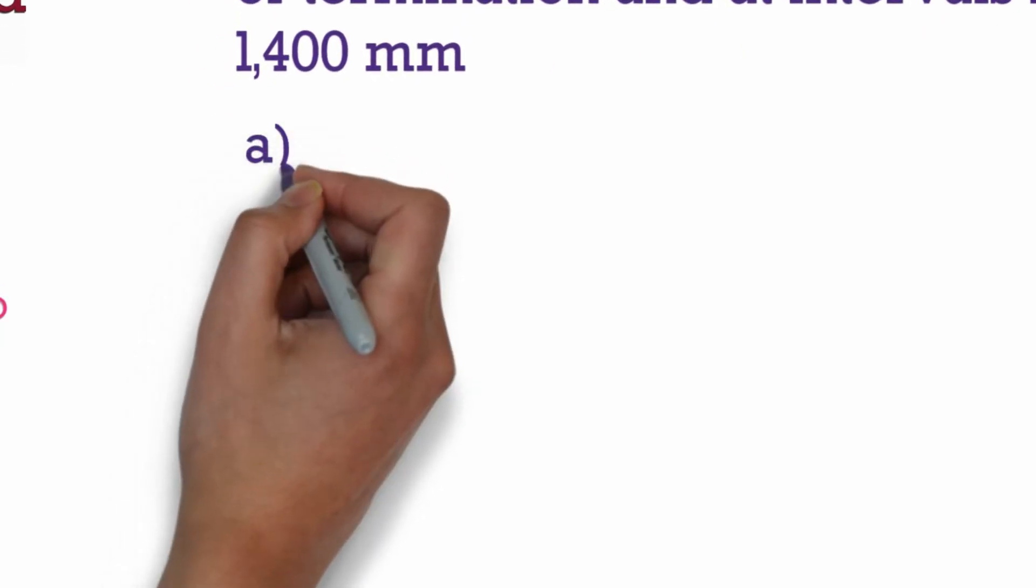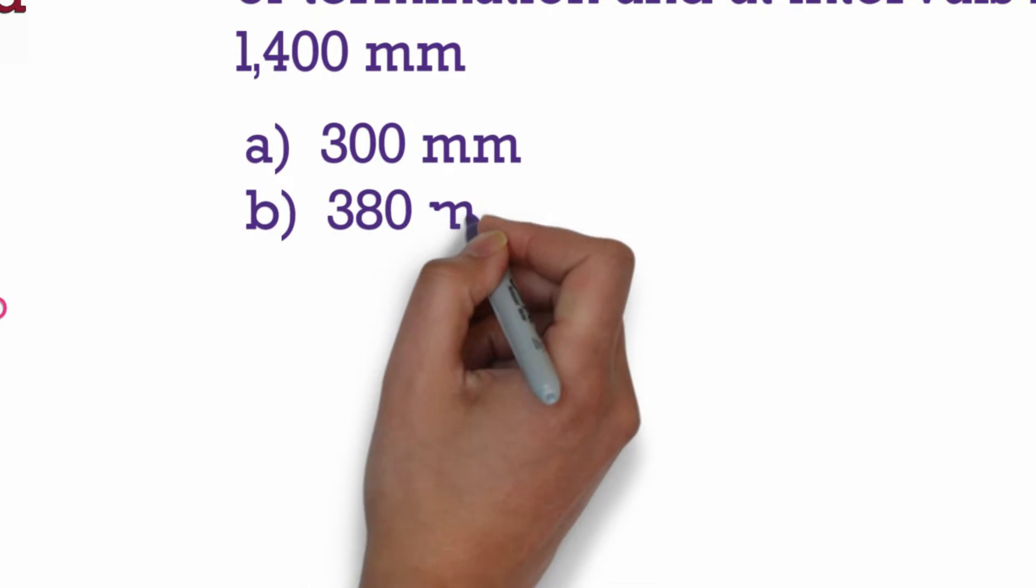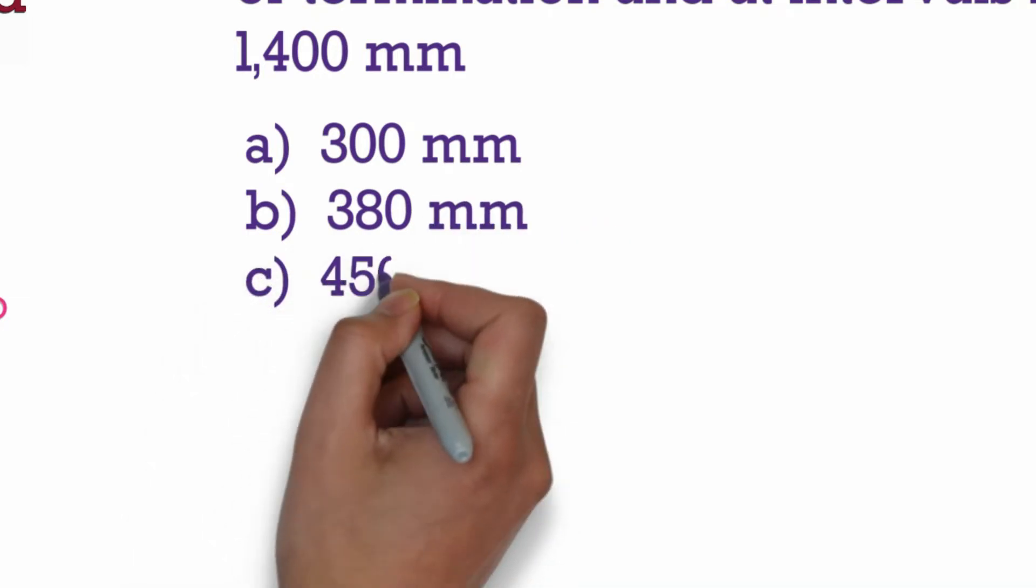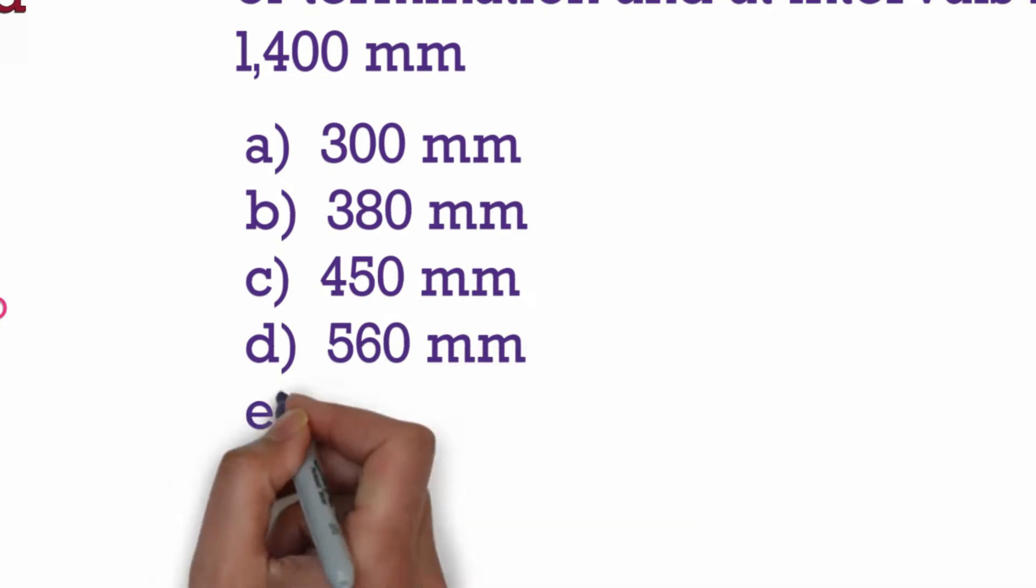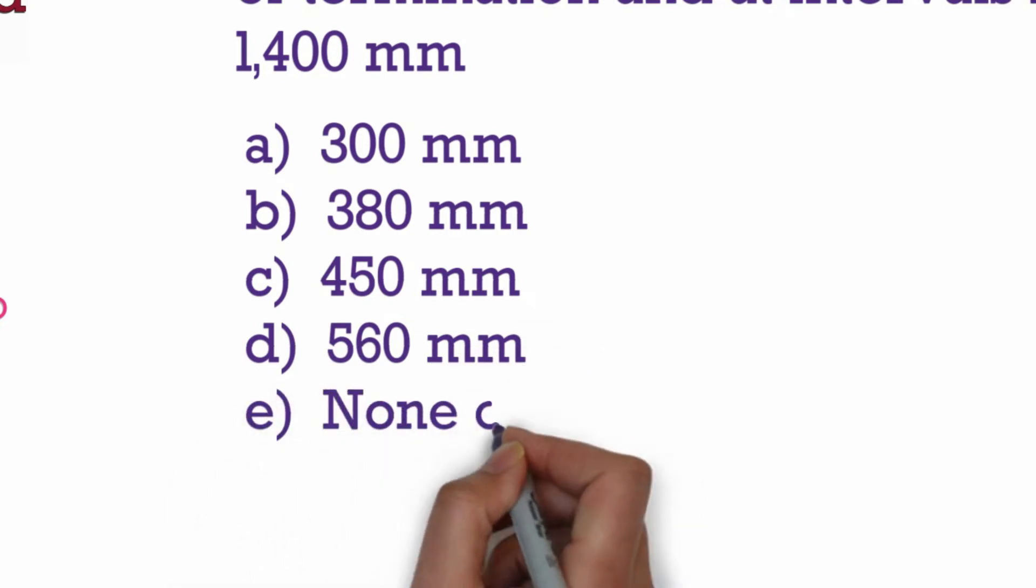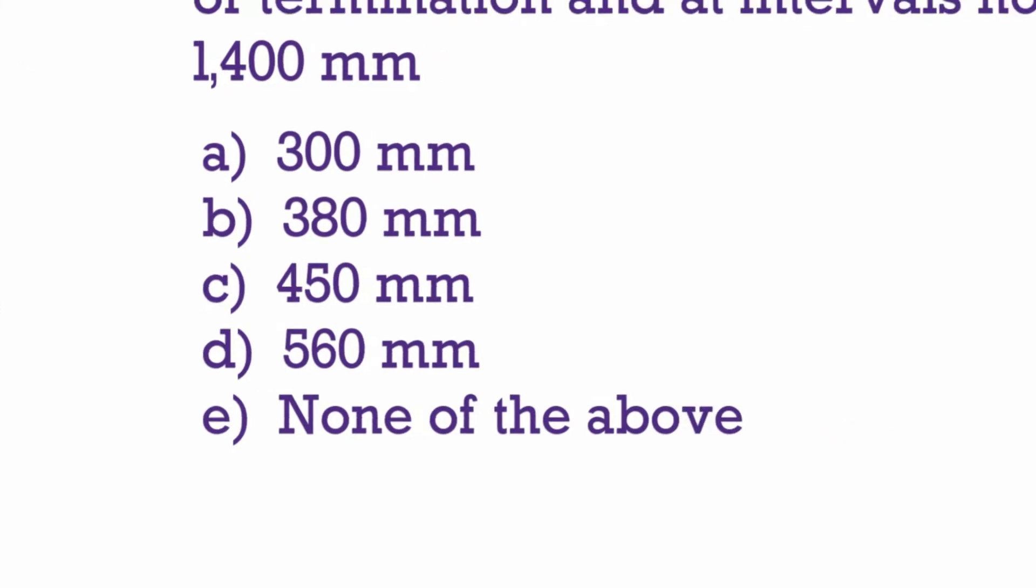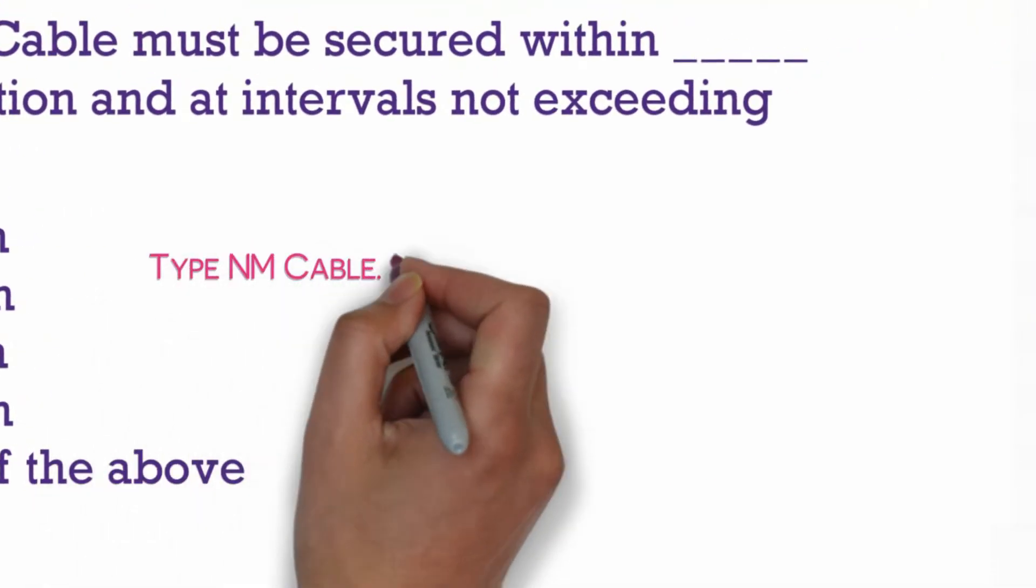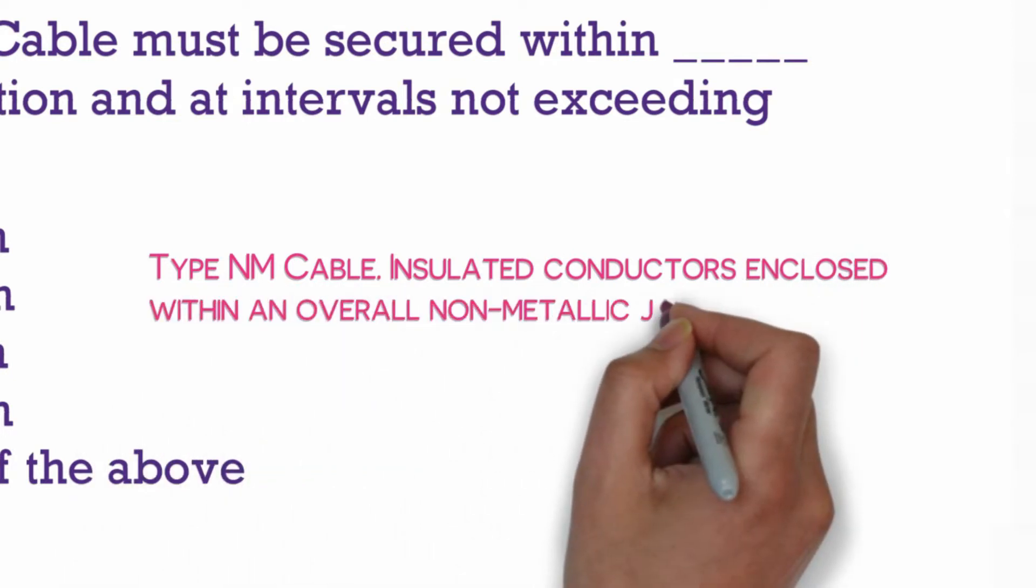A. 300 millimeter, B. 380 millimeter, C. 450 millimeter, D. 560 millimeter, E. None of the above. Type NM cable: insulated conductors enclosed within an overall non-metallic jacket.